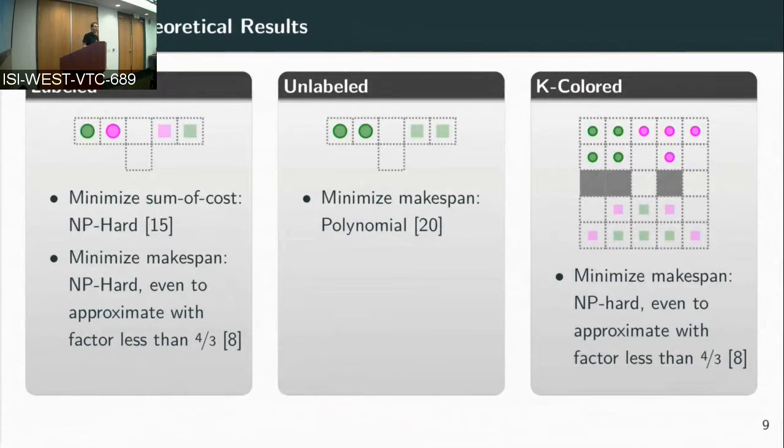If you want a solution that is suboptimal by a factor less than four thirds, we cannot get that. Surprisingly the unlabeled case can actually be solved in polynomial time and the proof is constructive, so you can actually come up with an algorithm that is based on flow-based techniques. In the k-colored case, if k is at least two, we also know that it's NP-hard to approximate. The hardness results are a little bit annoying, but of course people have tried solving it anyway.